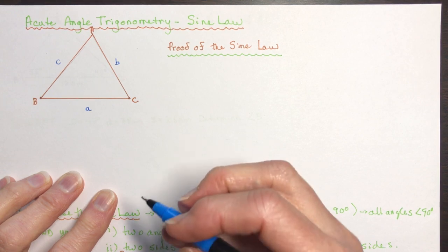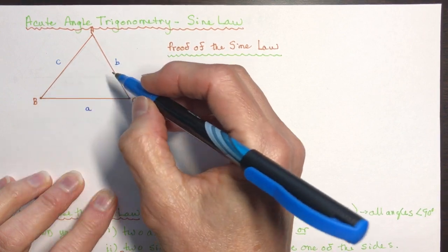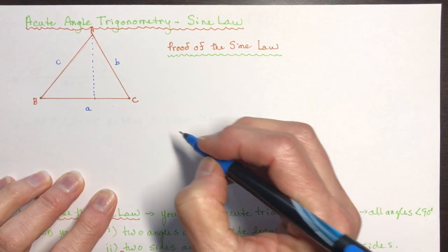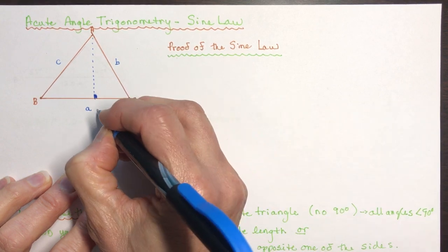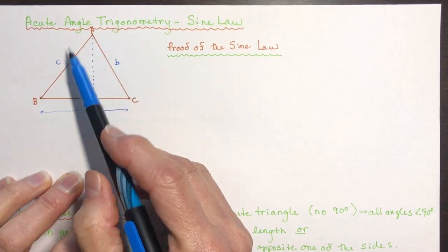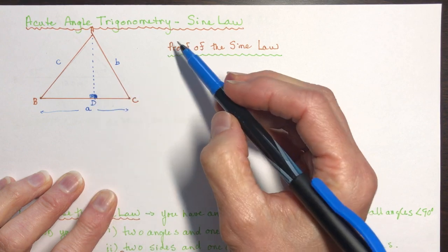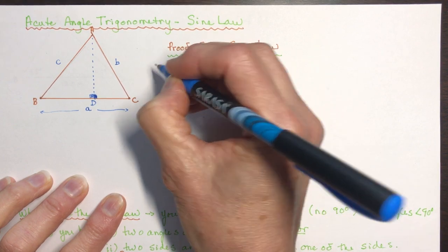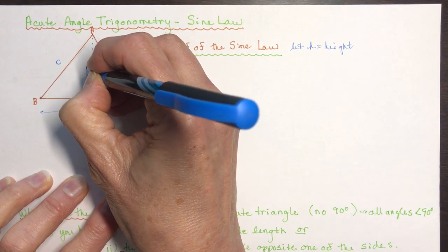The next thing we're going to do is drop a perpendicular from this vertex here. Dropping a perpendicular means you're falling straight down from the vertex, landing right here. So now I have two right angle triangles. On this side I have triangle ABD, and on the other side triangle ACD. We're going to let H be the height.